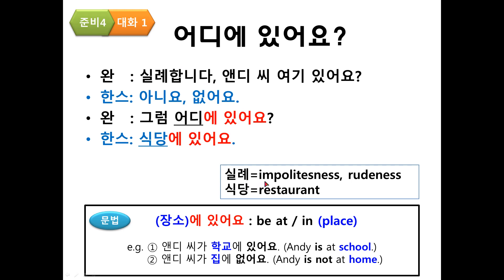Actually, 실례 means impoliteness or rudeness. So 실례하다 means to excuse. So 실례합니다 means excuse me. Andy 씨, 여기 있어요? 여기 means here. So, is Andy here? Andy 씨, 여기 있어요? 아니요, 없어요. No, he is not here.